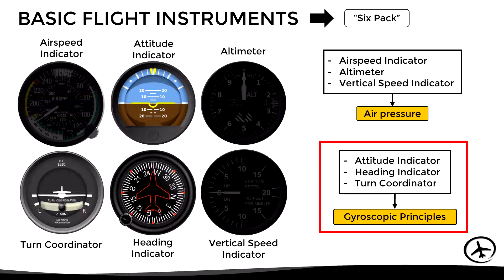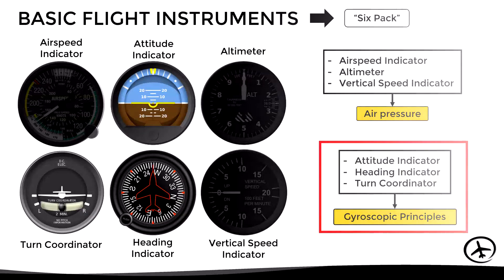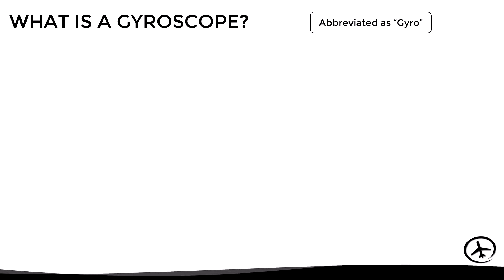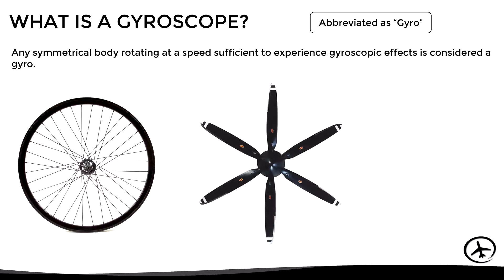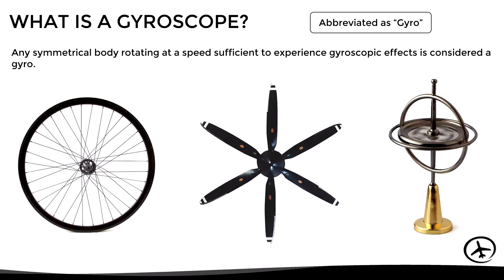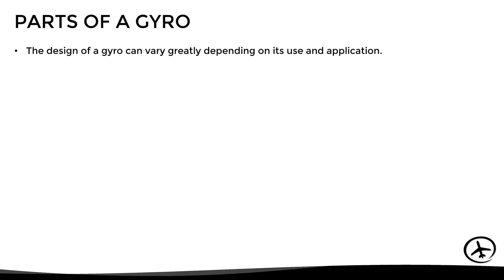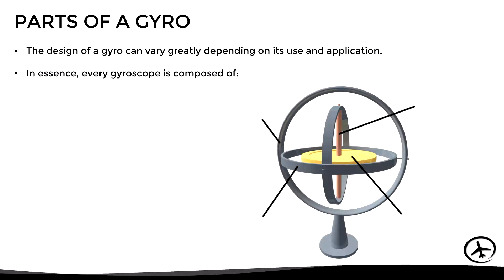Each of these instruments has its own internal gyroscope, specially arranged to measure a certain parameter. But before we go into detail with each one, let's see what a gyroscope actually is. The gyroscope, often abbreviated as a gyro, is any symmetrical body rotating at a speed sufficient to experience the gyroscopic effects. According to this, a bicycle wheel, a propeller, or a dedicated gyro are all examples of gyroscopes. In essence, every gyroscope is composed of a rotor that spins at high speed, the spin axis of the rotor, one or more gimbals, and the frame that supports the gyro.